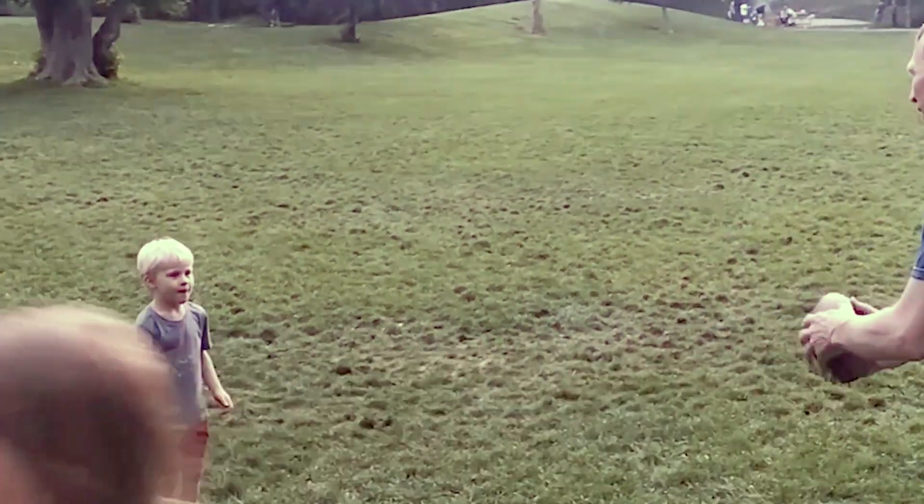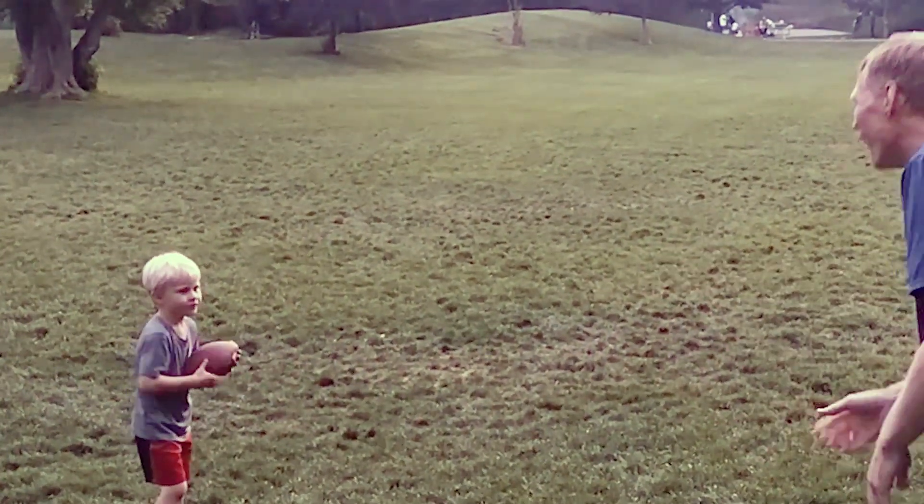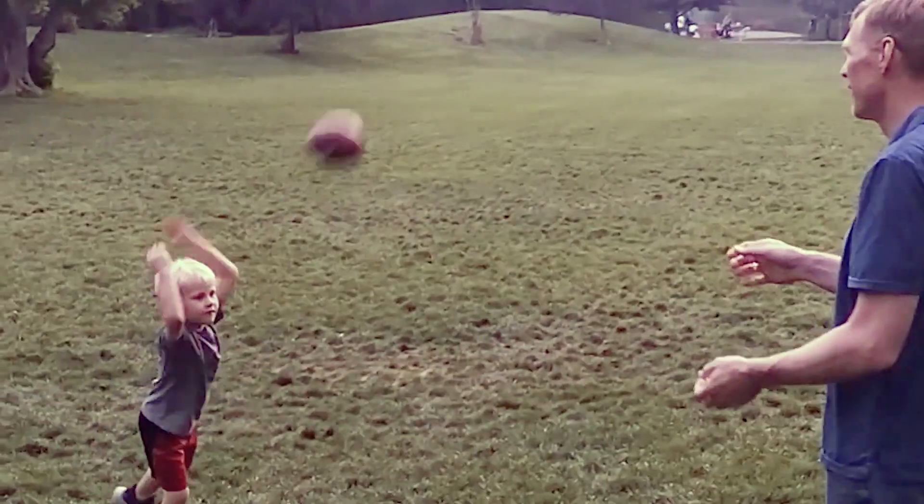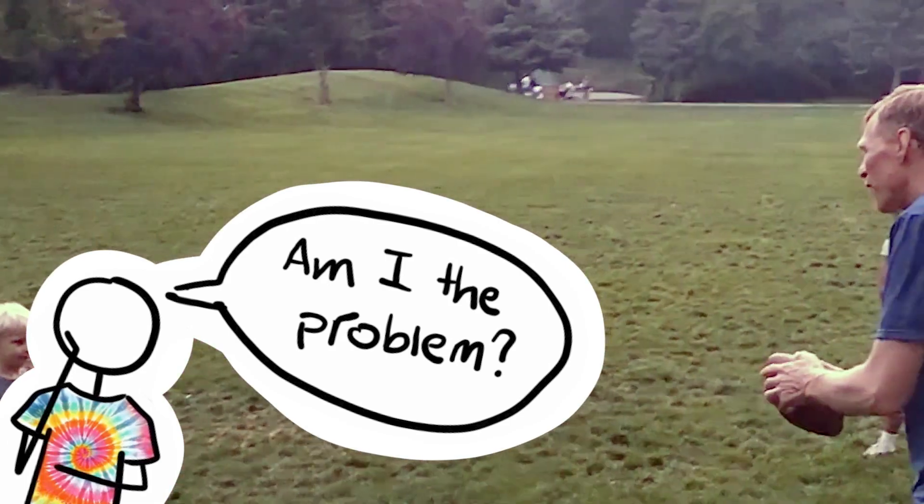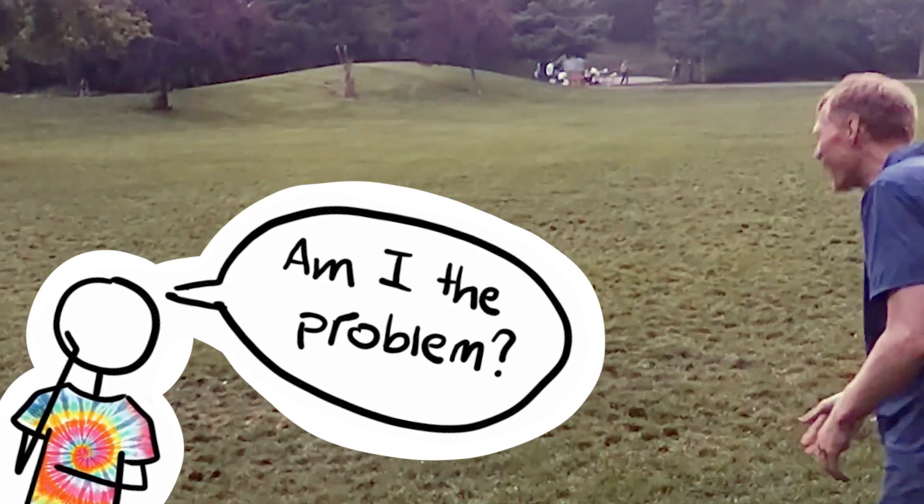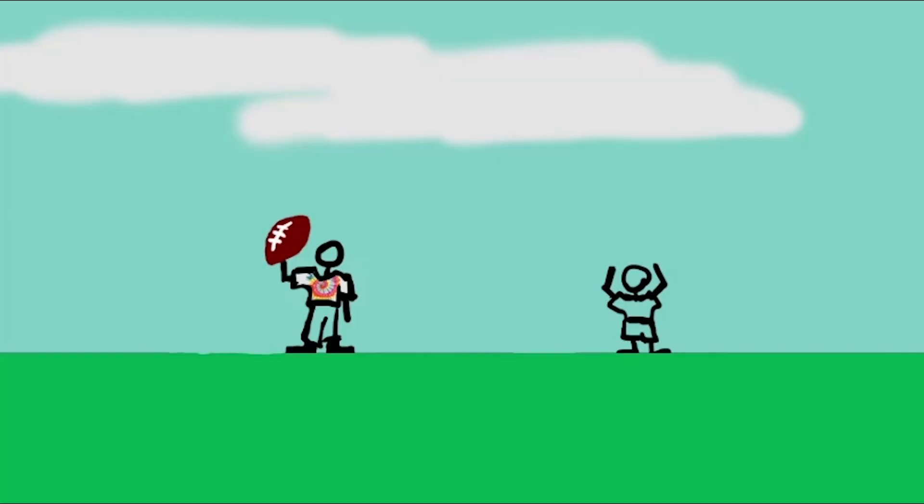He was really struggling to catch the ball. We hadn't practiced catching much, so part of that was just practice. But I started to wonder if part of the problem was how I was tossing the ball. There are lots of things I could change to my throw. I could change the distance I was away from my son, the height I released the ball, and the angle I tossed the ball. But what values for each of these would make it easiest for my son to catch the ball?